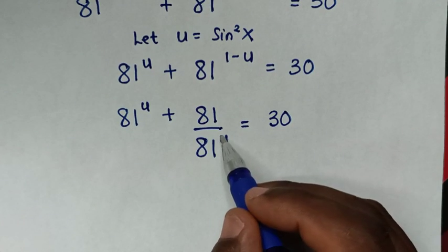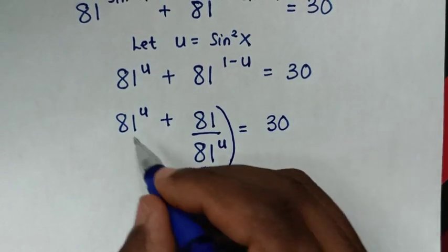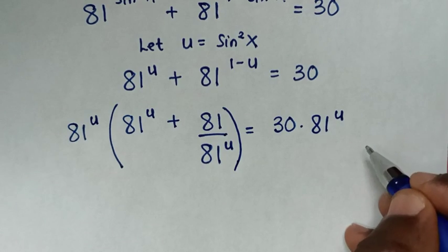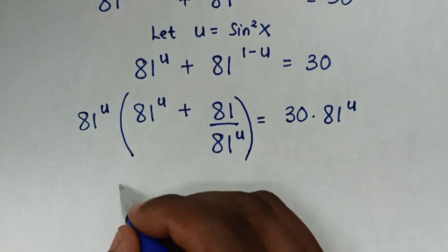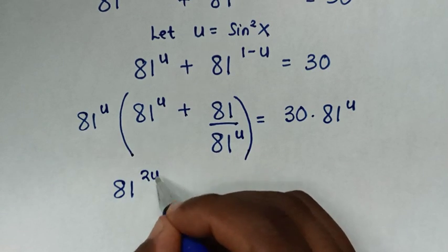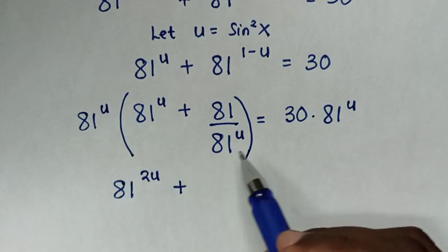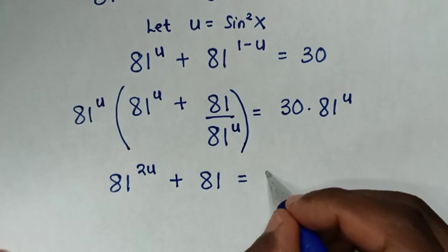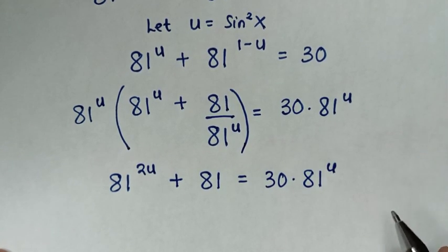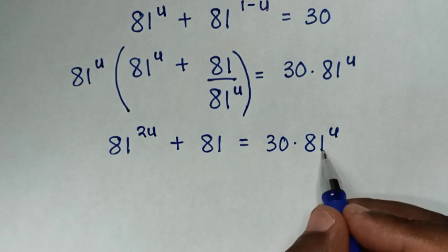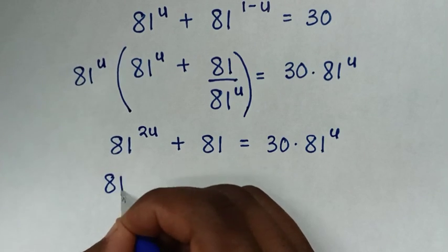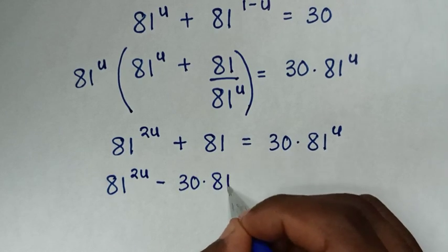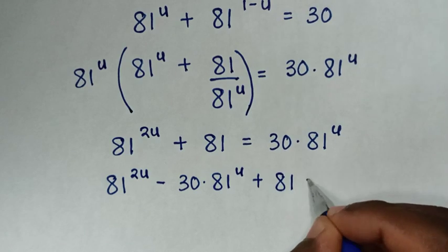To remove the denominator of 81^u, we multiply both sides by 81^u. So 81^u times 81^u gives 81^(2u), and 81 times 81^u divided by 81^u leaves 81. This gives 81^(2u) minus 30 times 81^u plus 81 equals 0.